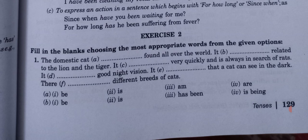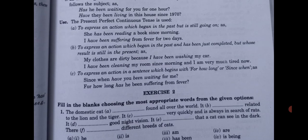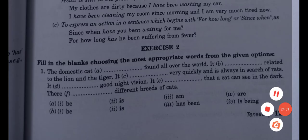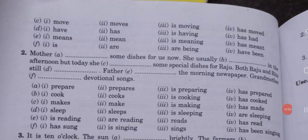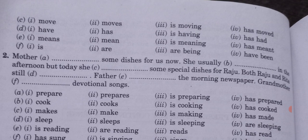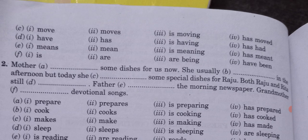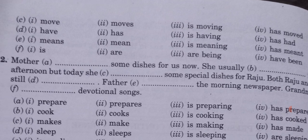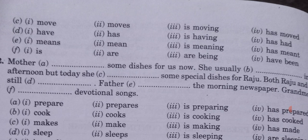An exercise is given here based on the present tenses. You have to do this exercise yourself and send it to me. Options A and B were given earlier; now options C, D, E, and F are given. You have to choose the correct option to fill in the blanks. Do only exercise number one — the remaining exercises you do not need to do.